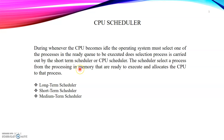Scheduling means assigning the CPU to different processes for their execution. Among the different processes that are ready and waiting to get the CPU, the CPU scheduler is the one who selects which process will get the CPU for its execution. It selects a process from memory that is ready to execute and allocates the CPU to that process.